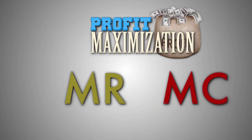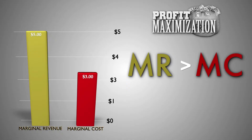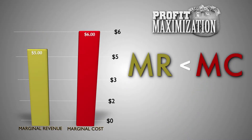If the marginal revenue of a unit of good M is greater than its marginal cost, the revenue generated for the firm by producing and selling that unit is more than enough to cover the cost paid by the firm to produce it. If the marginal revenue of a unit of good M is less than its marginal cost, the revenue generated for the firm by producing and selling that unit is not enough to cover the cost paid by the firm to produce it.